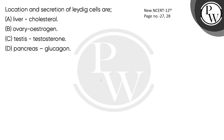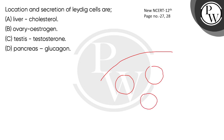When you look at the section of the testis, there are testicular lobules, and per lobule you have 1, 2, 3 seminiferous tubules. These seminiferous tubules are lined with two types of cells.